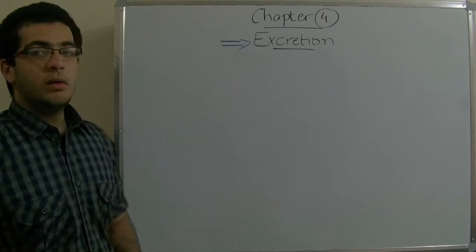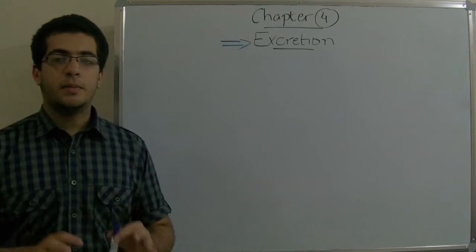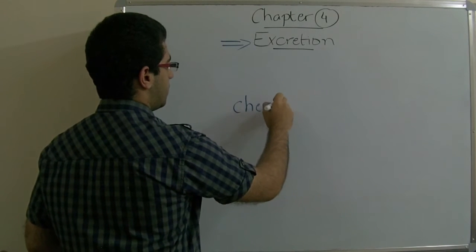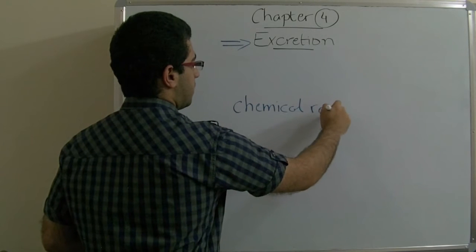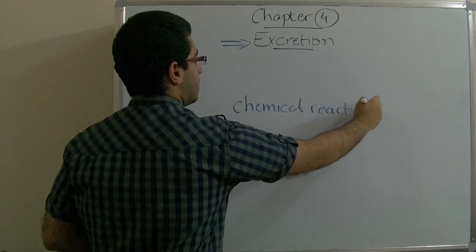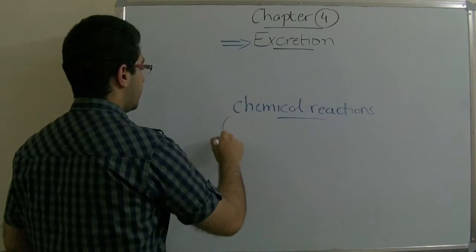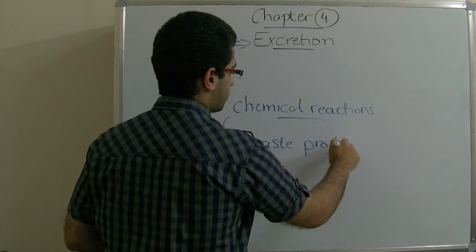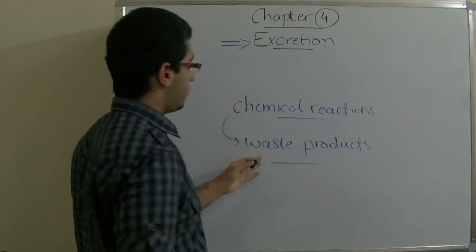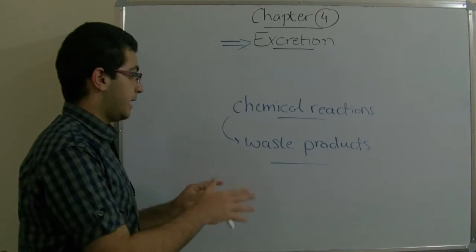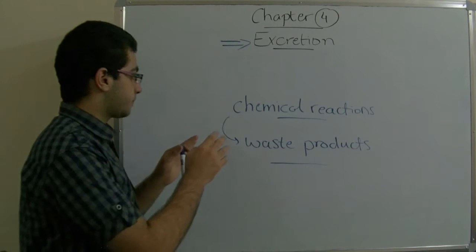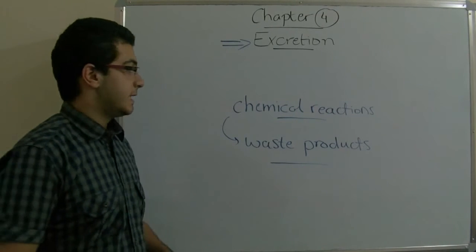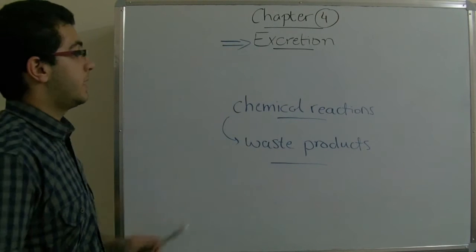All the biological processes in man are chemical reactions. After they are finished, they leave waste products, or chemical waste products. If these waste products accumulate inside the body and are not allowed to leave the body, they lead to serious problems and diseases. So that's why the excretion process takes place.